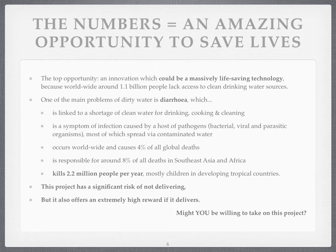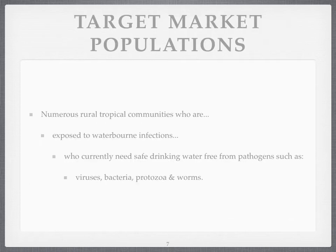This project has significant risks of not delivering, but it also has significant costs if it doesn't deliver. So I'm trying to see if it actually can deliver, because it could offer very high rewards if it does. Could you be interested in taking on this project, or somebody you know? The target populations are lots of rural, tropical communities exposed to waterborne infections such as viruses, bacteria like cholera, worms of various kinds, and relatives of the amoebae. They want safe drinking water that's free from pathogens. Can we give it to them?